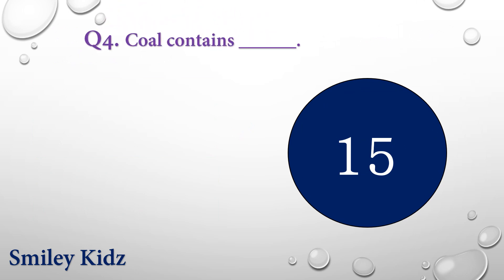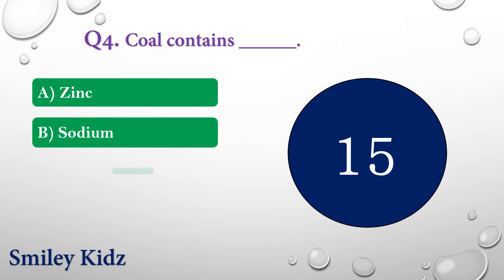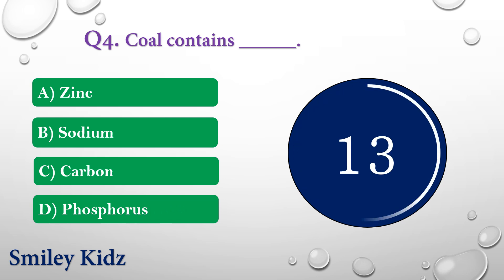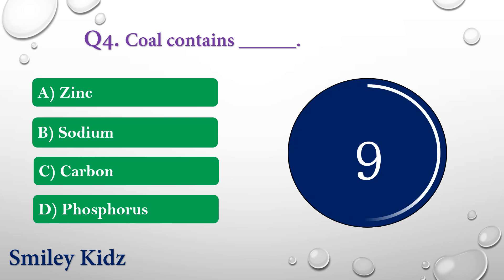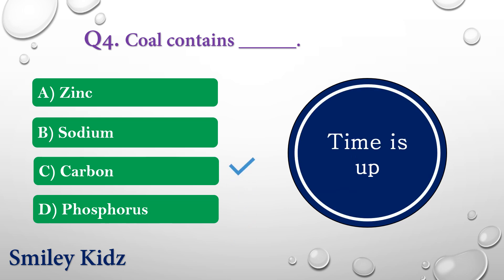Question number four: Coal contains dash. The options are: A) Zinc, B) Sodium, C) Carbon, or D) Phosphorus. Your time is up and the right answer is option C — Carbon. Coal contains carbon.